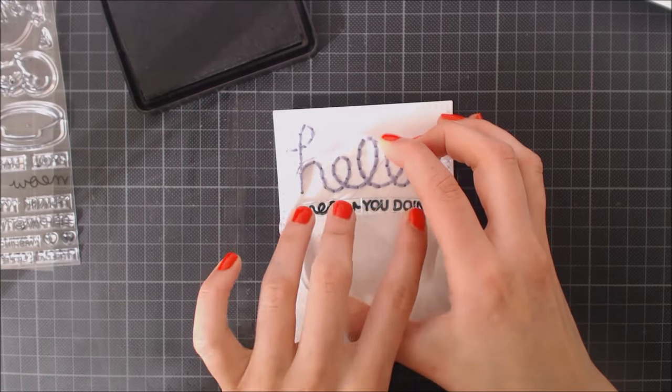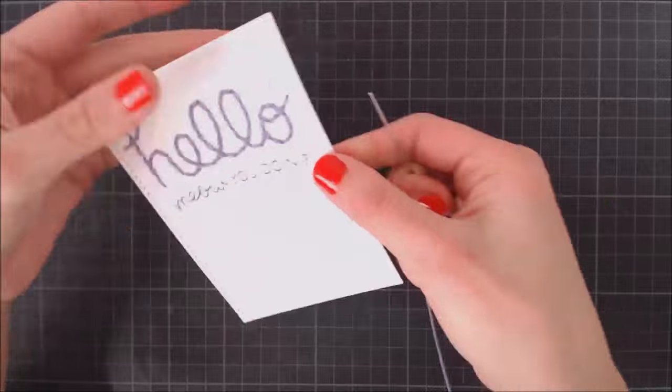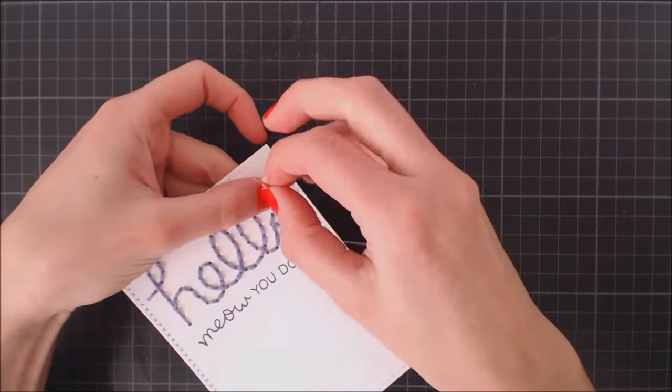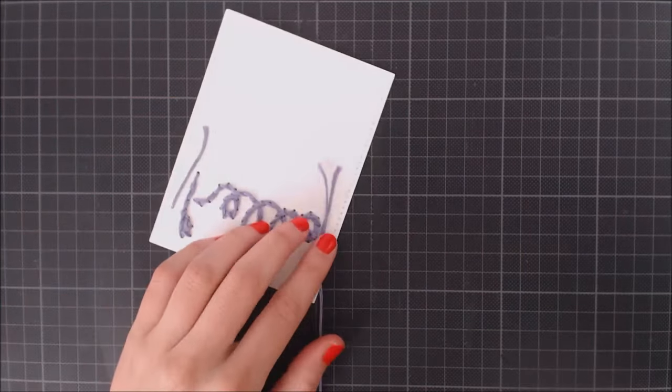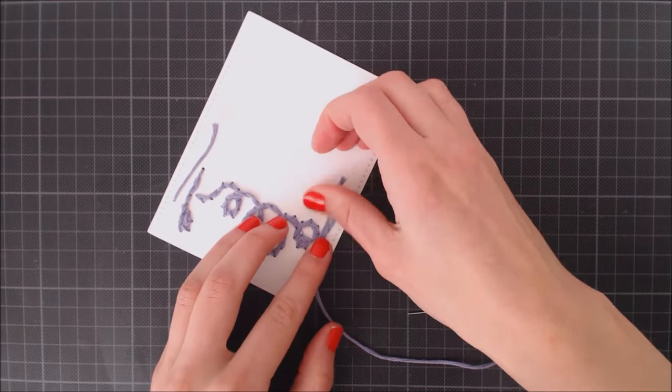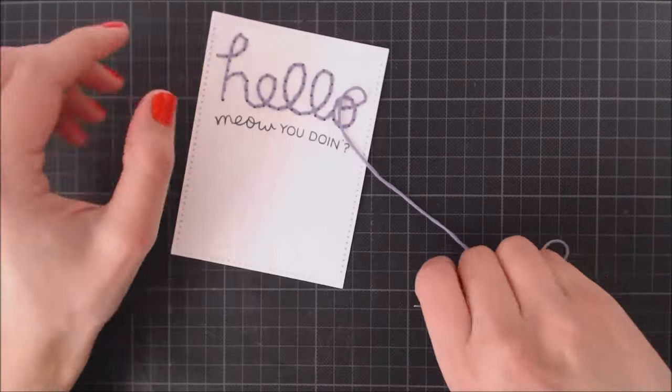Now I'm going to be using a new piece of yarn, securing it on the back of my cardstock just in the same hole where I finish my embroidering, and I'm going to be using liquid glue to adhere it to my cardstock on a curved path.